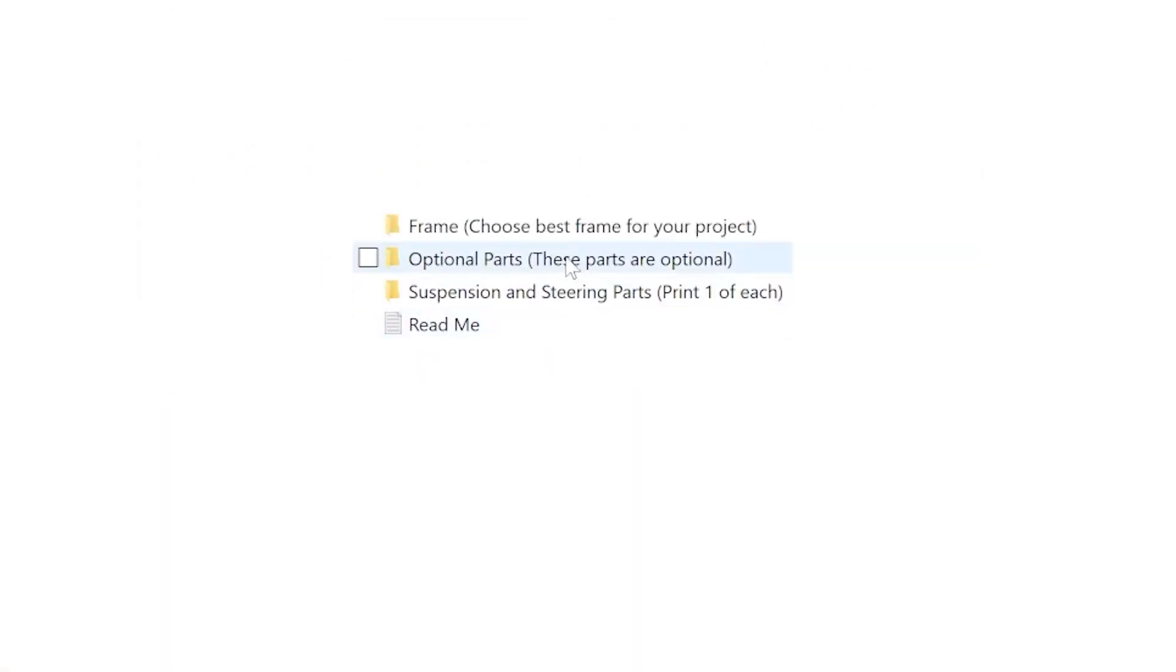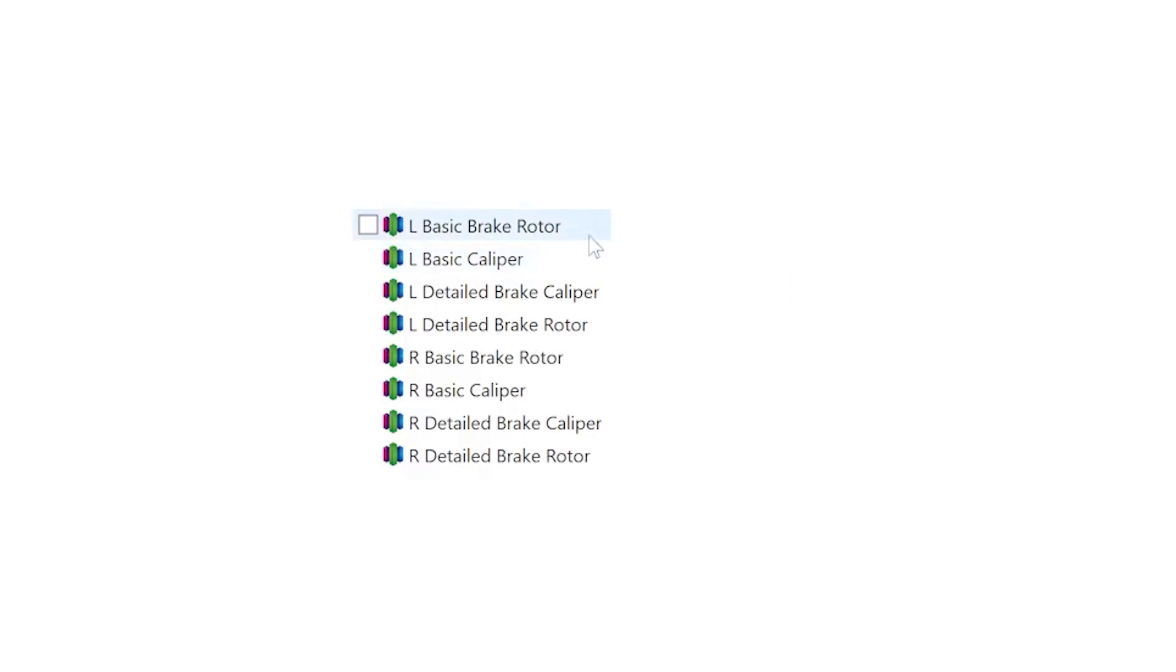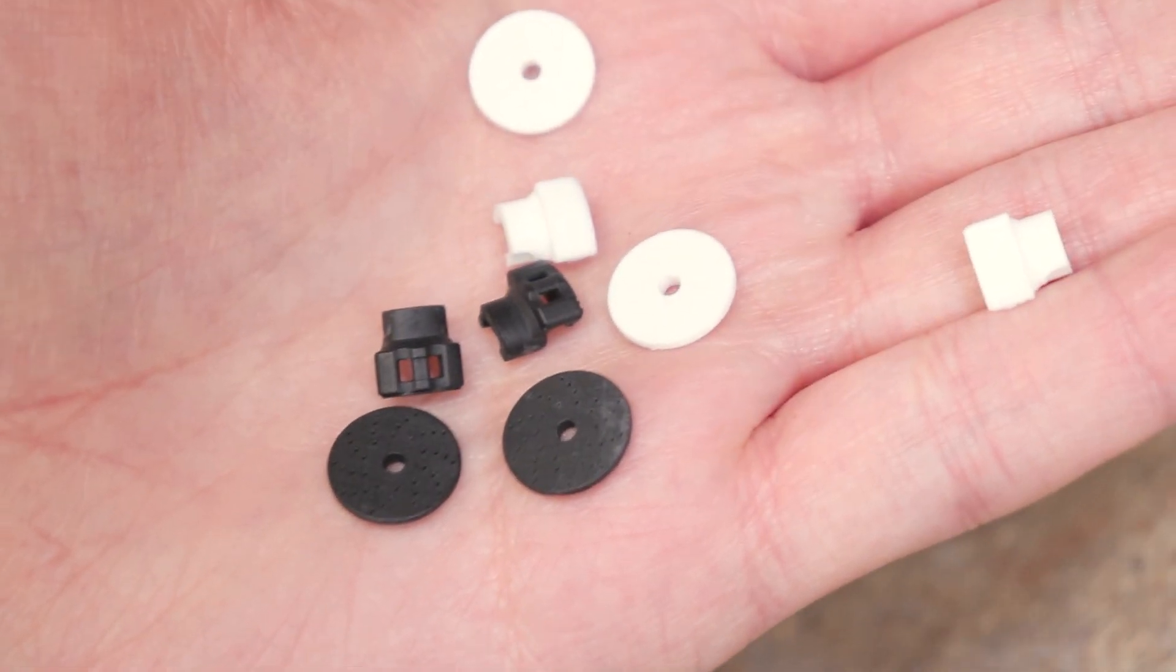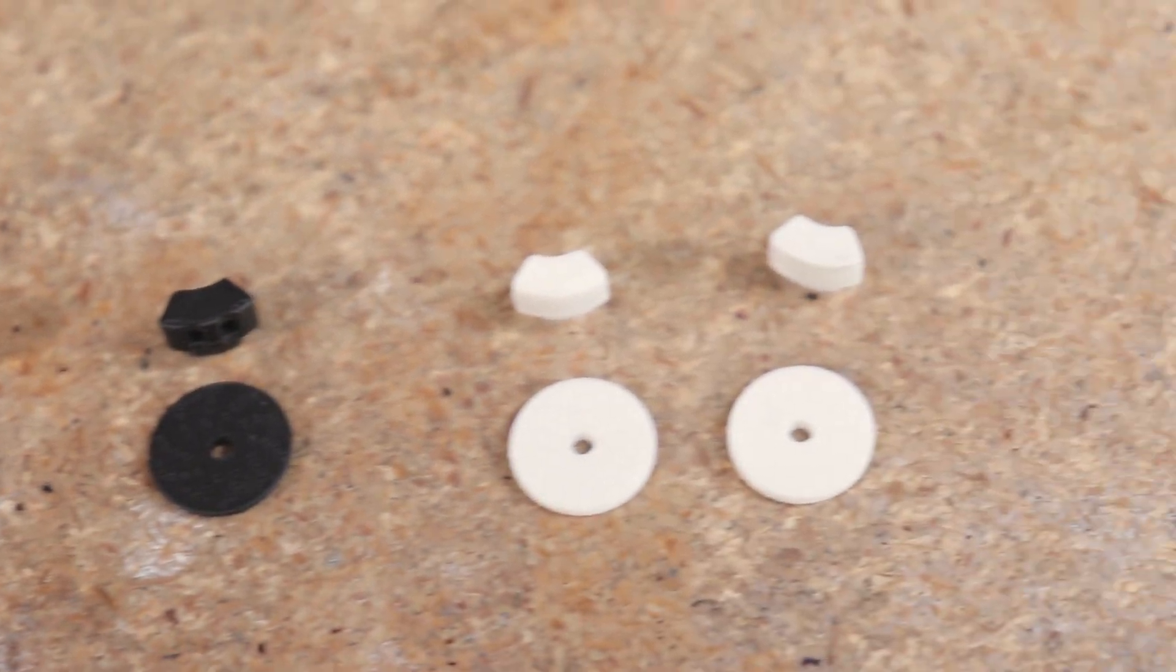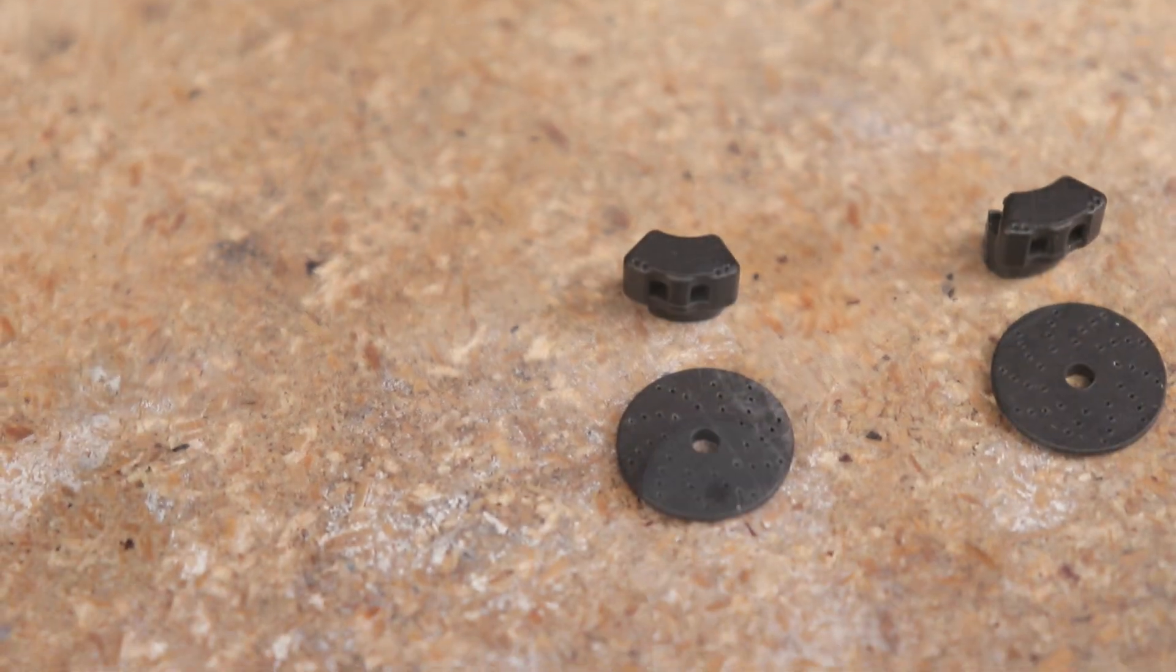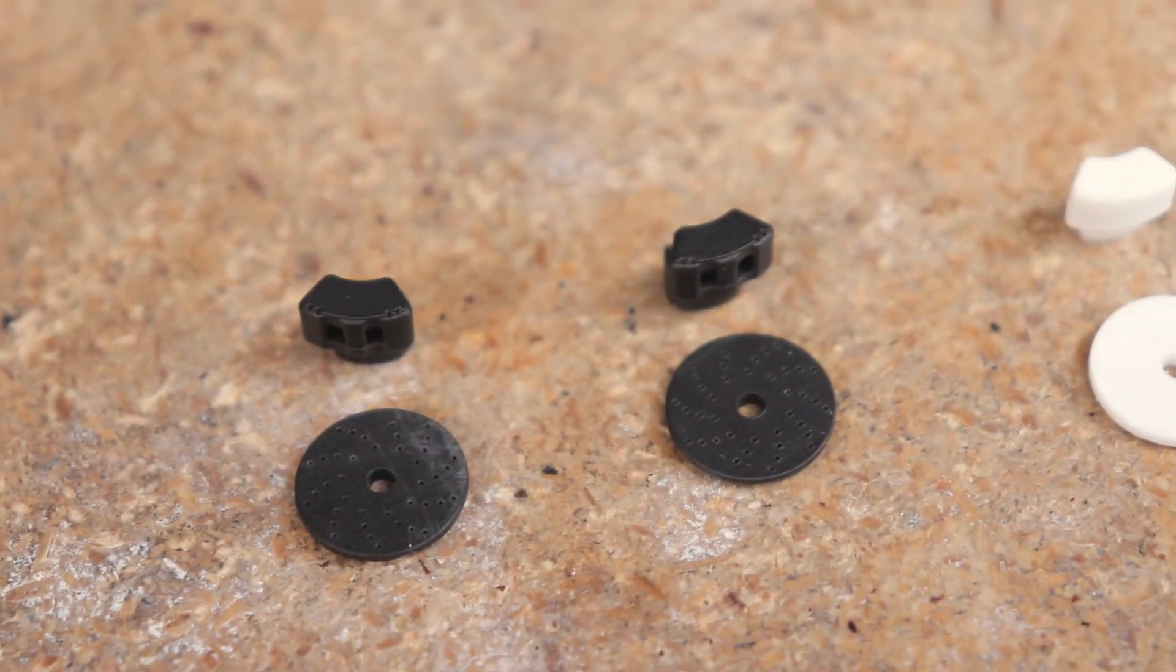In addition to the new frame piece, the first batch of optional parts is now available which are these disc brake calipers and rotors. Just like with the suspension parts, make sure that the parts marked with an R go on the right hand side of the vehicle and the parts marked with an L go on the left hand side.